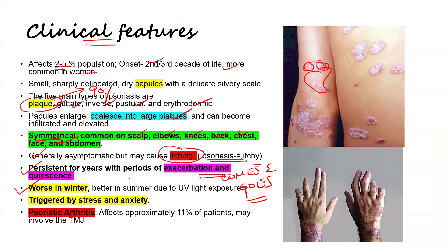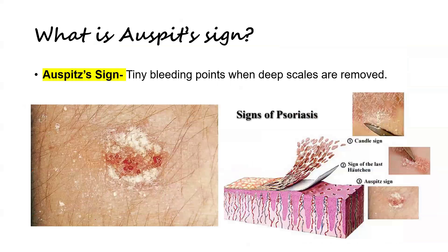Lesions are worse in winter and better in summer, possibly due to UV light exposure. The disease is triggered by stress and anxiety. Up to 11% of patients go on to suffer from psoriatic arthritis due to inflammation in the synovial fluid of the joints. It may also affect the distal interphalangeal joint (DIP joint).